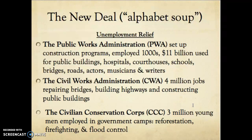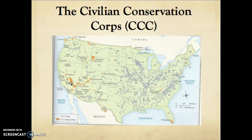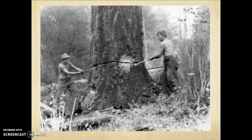The CCC — Civilian Conservation Corps — is one of the most successful programs of the New Deal. It provided 3 million young men, roughly ages 16 to 24, with employment in government camps. They were in charge of reforestation, firefighting, and flood control. Roosevelt was trying to help all sectors of the economy. The CCC was segregated — there were white CCC camps and black CCC camps, so social issues persisted. This map shows every dot as a CCC camp spread all across the United States, including work in national parks where they established hiking trails. Here's a picture of young men doing conservation work — they felt useful, had more self-esteem, and were less reliant on government.